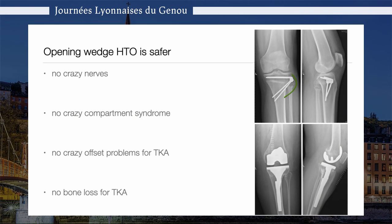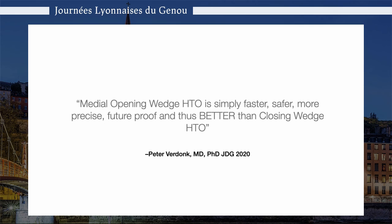Opening wedge osteotomy is also safer. There are no nerve risks on the lateral side, no compartment syndrome, and no offset problems — issues we all know from closing wedge osteotomy — because there is very little bone loss for a subsequent total knee arthroplasty versus conventional closing wedge technique. Basically, medial opening wedge osteotomy is simply faster, safer, more precise, and future-proof, and therefore it is better than the closing wedge osteotomy.